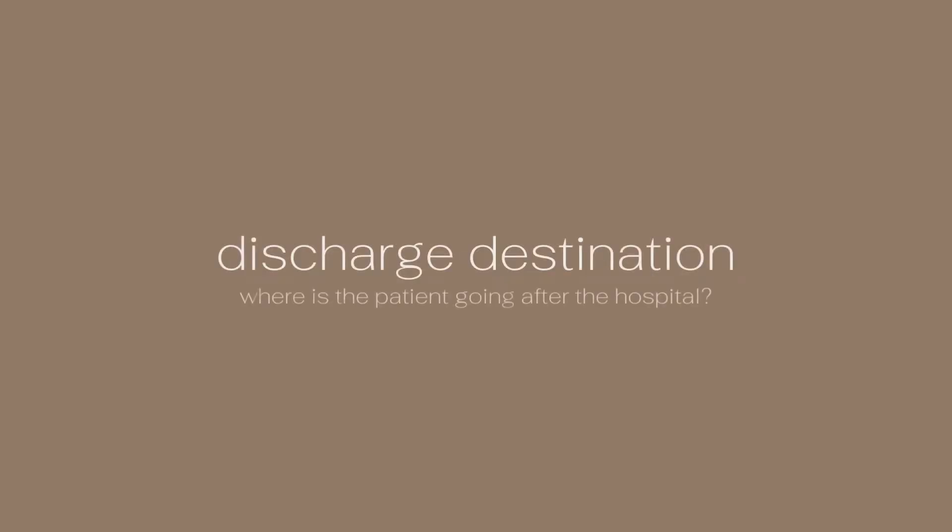The next thing is discharge destination — where is the patient actually going to go? This is a huge topic, but I have a whole separate video on it, so please check that out if you want to learn more. I cover everything from home health to skilled nursing facility, to acute rehab unit, to long-term acute care. The important thing to know is that if you determine what skilled needs your patient has, that will help determine the recommended discharge destination.